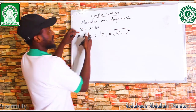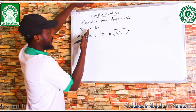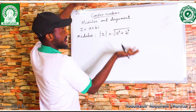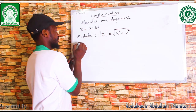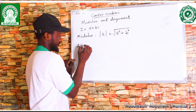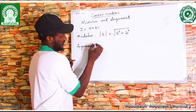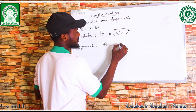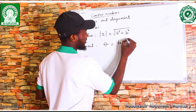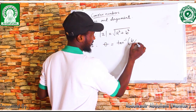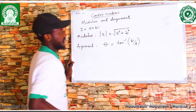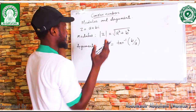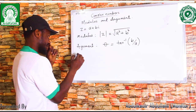The modulus of a complex number results in a real number. And also the argument — the argument is theta, which is equal to tan inverse of b over a. This theta is what we call the argument, while this one is the modulus.